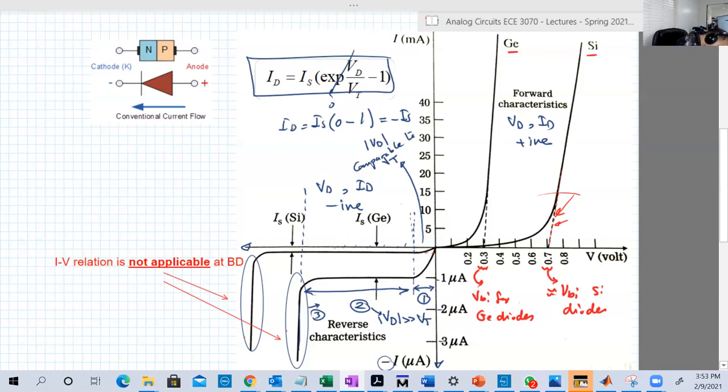Then in breakdown, this is VBD for germanium. This equation doesn't hold anymore. The I-V relation doesn't hold here. How are we going to solve this in our circuits in breakdown? Basically, you assume that the voltage across the diode is equal to minus VBD, then you try to get the current based on the rest of the circuit, as we will see later in next videos.